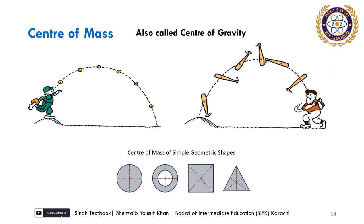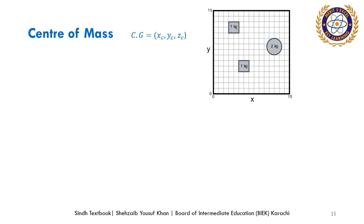Symmetric objects — such that if a line is drawn through the center point, the two halves are identical — have predictable and easy-to-understand motion. But if you throw a bat, it not only follows projectile motion but also rotates and spins on its own axis, continuously changing its center of mass, as you can see on screen. Center of gravity can be calculated and is represented by the subscript c: x_c for x-coordinate, y_c for y-coordinate, and z_c for z-coordinate.